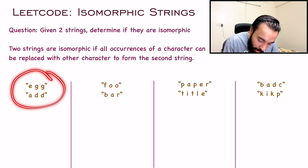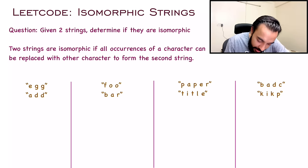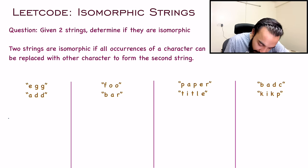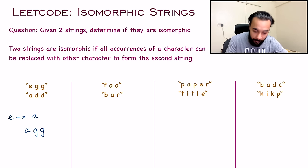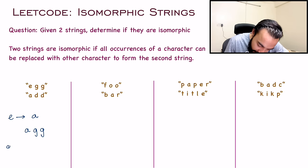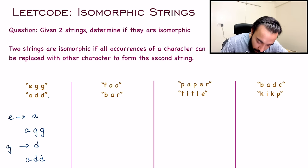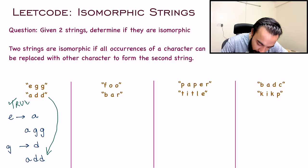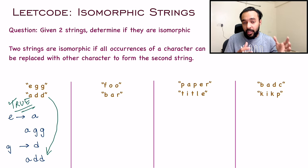In test case one, you start with the letter E and replace it with A, so your string becomes AGG. Then you move on to the second character G and replace G with D. Once you do that, your string becomes ADD. So we were able to achieve this string, and for the first test case you return true because these two strings are isomorphic.